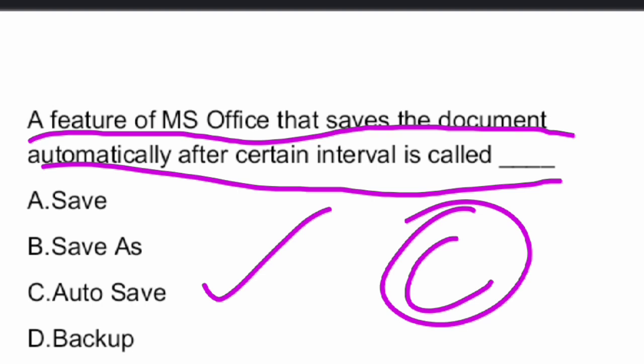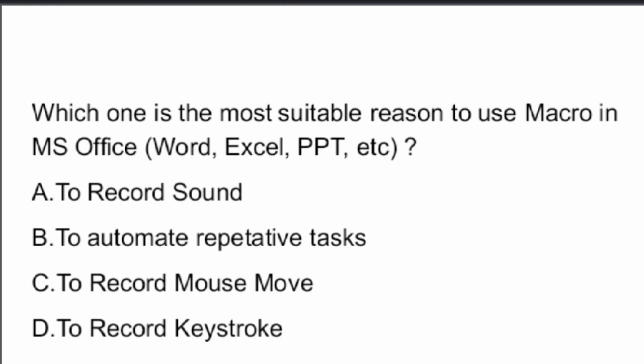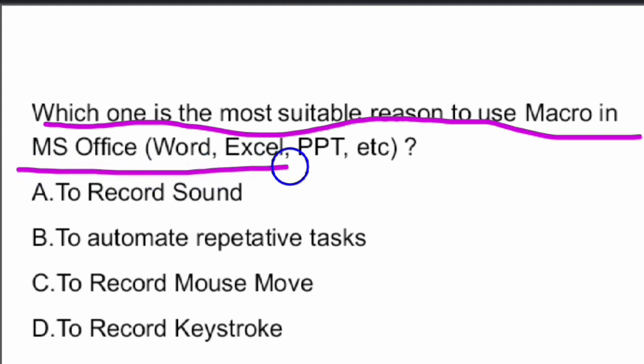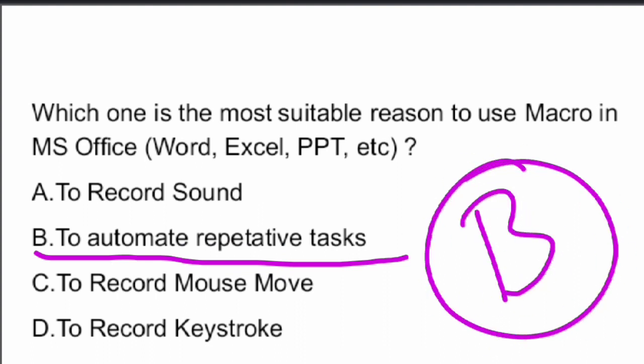That feature is called AutoSave. Next question: Which is the most suitable reason to use a macro in MS Office? The answer is Option B — to automate repetitive tasks.